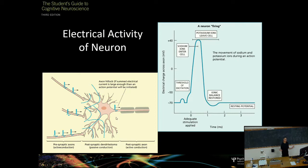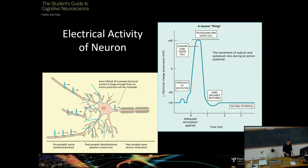When all the electrical activity coming from other neurons sums up to a certain amount, that triggers a discharge. You get a flow of charged electrical ions in and out, an action potential is generated, and this propagates down in a chain reaction. That is effectively how neurons communicate with each other electrically.